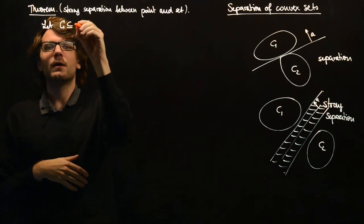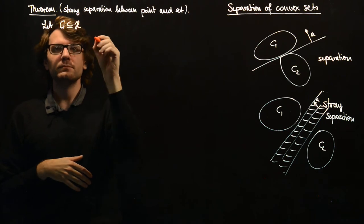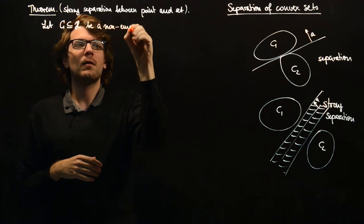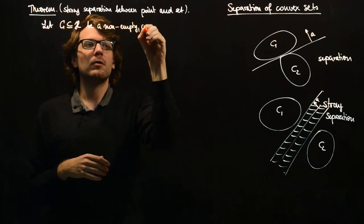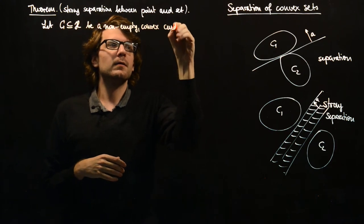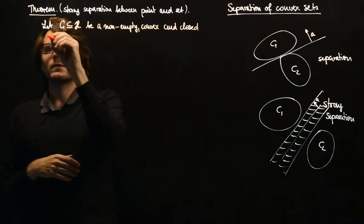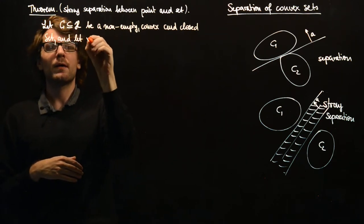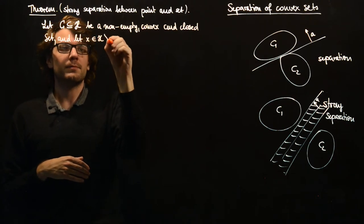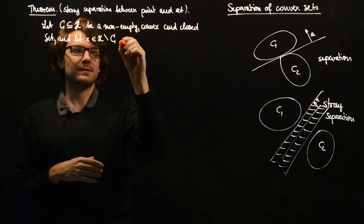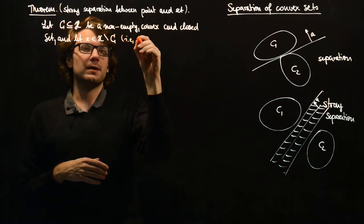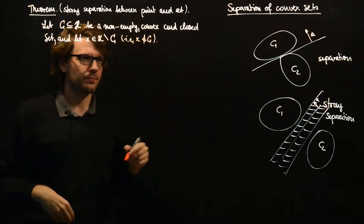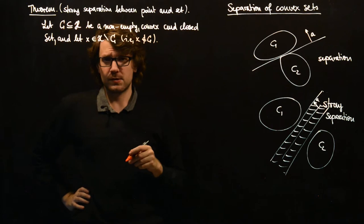And so let C be a non-empty, convex and closed set and let X be in H minus C. That means, in case you don't know this notation, X is not in C.